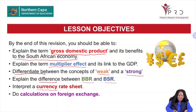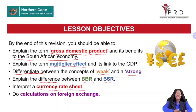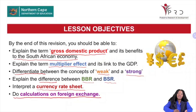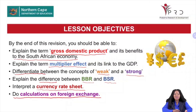You must also be able to explain the difference between the BBR and the BSR. Before you start with your calculations, you must know the difference between these two because you will see them in your currency rate sheet. You did them in Grade 11 — this is just a revision in Grade 12. You must be able to interpret the currency rate sheet — that table with the country, currency code, currency symbol, BBR and BSR. And lastly, you must be able to do calculations on foreign exchange.